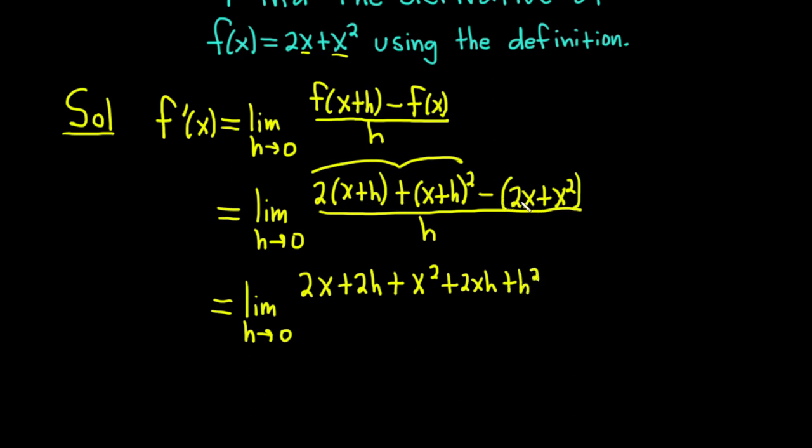Then we have minus parentheses 2x plus x squared. There is a minus 1 here, so we want to distribute that. Minus 1 times 2x is minus 2x. Minus 1 times x squared is minus x squared. All of this is being divided by little h.